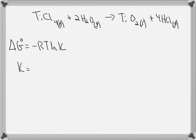So K is going to be equal to e to the negative delta G standard over RT. So we need to solve for delta G standard to get the K.